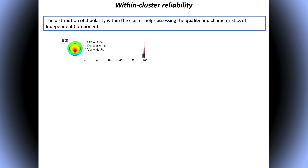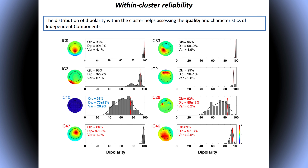For each component, we have a quality metric. The quality measures the tightness of the cluster in the projection — how tight the data points were. Then we have the dipolarity, which was discussed in the previous video, and the variance — how much variance of the data the component explains. For IC9, for example, it explains about 4% of the data variance. The dipole fit is about 99%, with residual variance less than 1%, and it is very tightly clustered across the multiple runs.